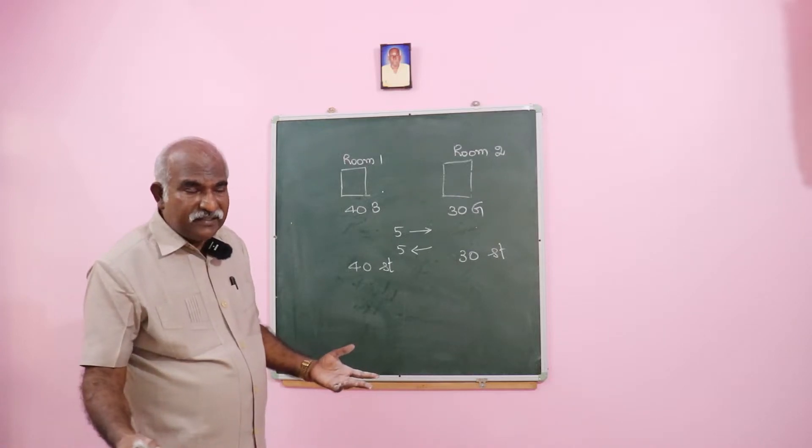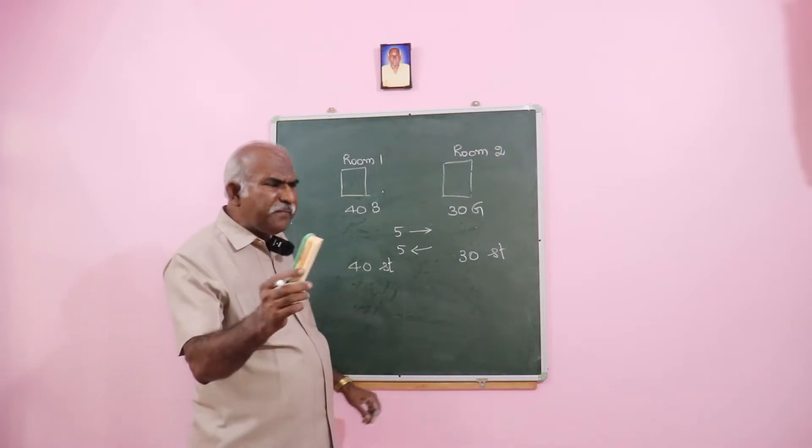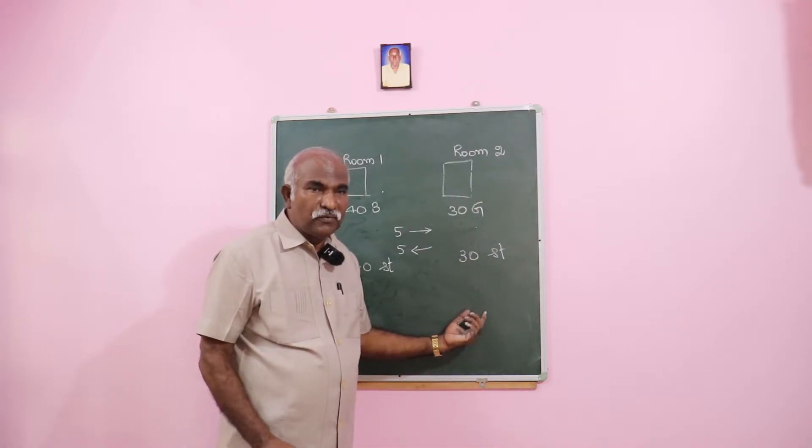And surprisingly, the answer is they will be equal. That is, the number of girls in room one will be the same as the number of boys in room two. Why?